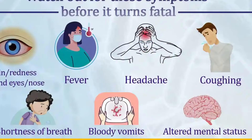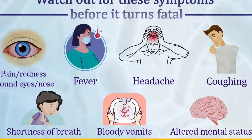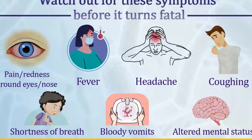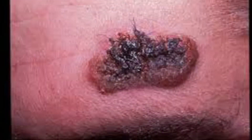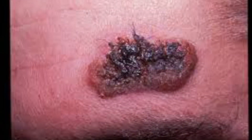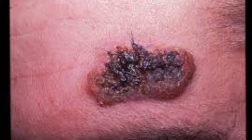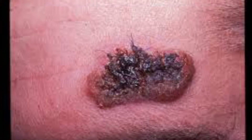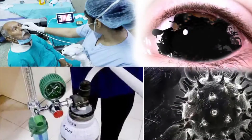If it infects the lungs, symptoms include shortness of breath and chest pain. If the skin is infected, it can cause redness that later turns black — which is where the name 'black fungus' came from. If it infects the nose, the patient can have a nasal infection.